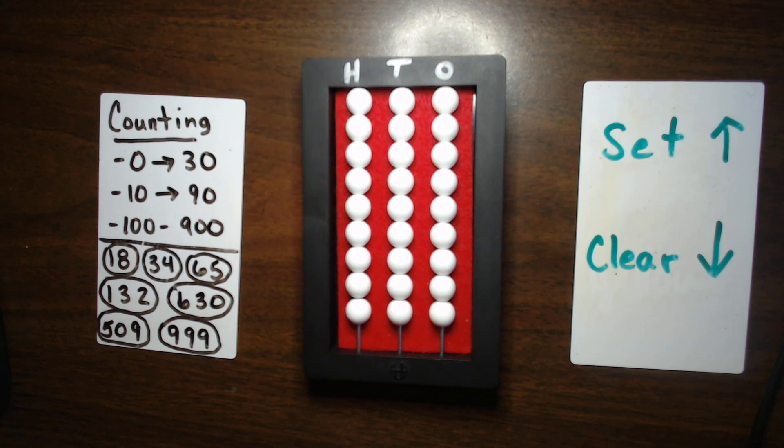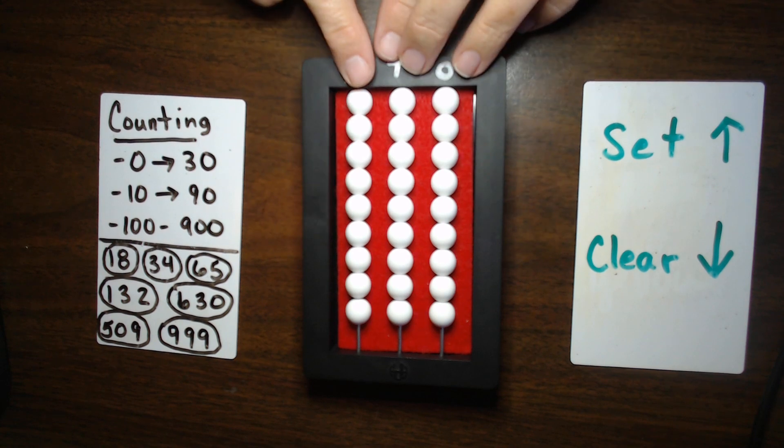We're going to look at some simple counting and setting numbers. If you're looking for a little more than that, such as adding or subtracting with or without regrouping, or how to use the Cranmer Abacus, then be on the lookout for some of my other videos. But for today, we're going to look at the Beginner's Abacus.